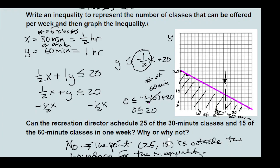We can also verify algebraically: is 15 less than or equal to negative one-half times 25 plus 20? That gives us negative 12.5 plus 20, which equals 7.5. So is 15 less than or equal to 7.5? No — that's a false statement. Two different ways to look at it, but both confirm the answer. The visual representation is the most intuitive, but the algebraic check is great for verifying your work.